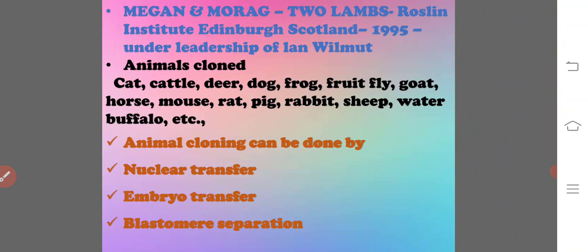The sheep Dolly was the first successful cloned animal. Until 2015, many species were cloned, including cat, cattle, deer, dog, frog, fruit fly, goat, horse, mouse, rat, pig, rabbit, sheep, water buffalo, and wolf. Methods involved in animal cloning are: nuclear transfer, embryo splitting, and blastomere separation.